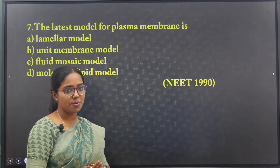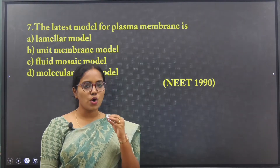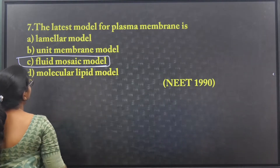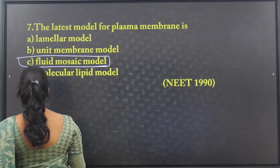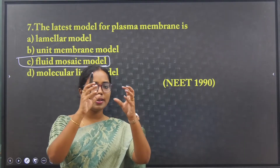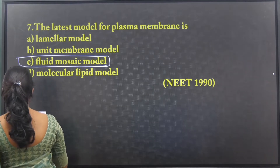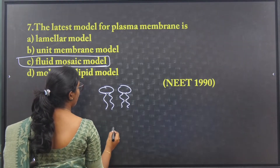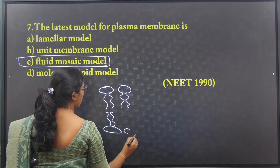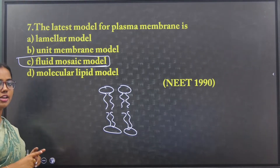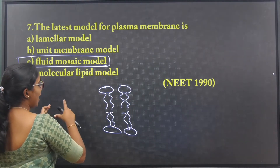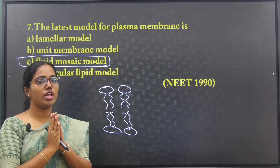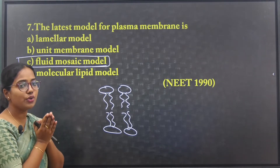The latest model for the plasma membrane — we all know it is the fluid mosaic model, proposed by Singer and Nicholson. The fluid mosaic model proposes that the cell membrane is made up of a phospholipid bilayer. This is the widely accepted model for the plasma membrane.